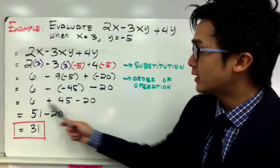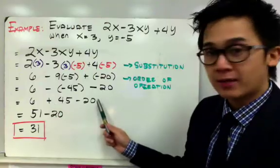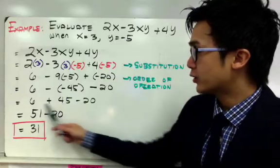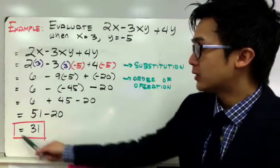Now using the order of operation, when you're left with addition and subtraction, all you need to do is perform the left-to-right method. So you don't need to worry about PEMDAS anymore with addition and subtraction. So you have 6 plus 45, which is 51, minus 20, which gives you 31.